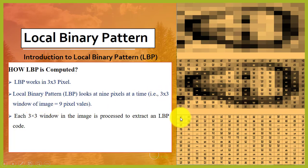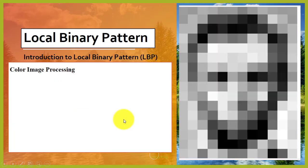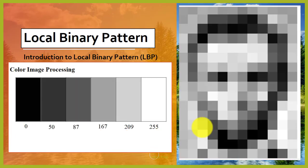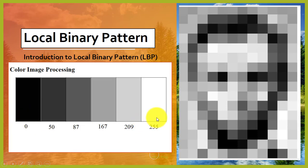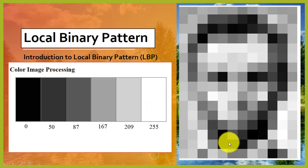Now we have color image processing. As I told you before, a digital image is just a table of numbers with values from 0 to 255. The color for 0 is black, for 255 is white, and this is the range for grayscale. In the digital image we have certain pixel values, and according to the pixel value we assign the color.